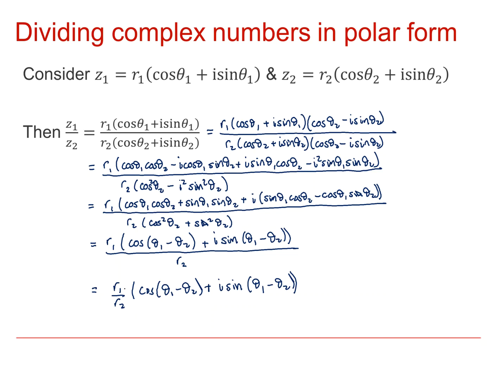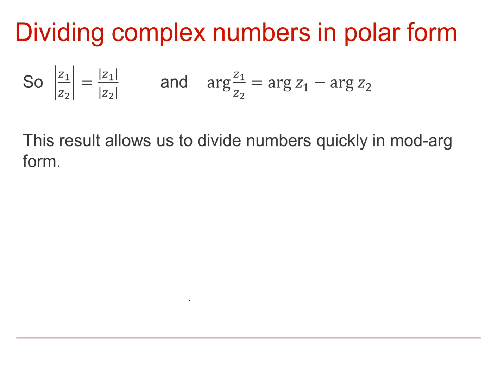So you can see that the modulus of Z1 over Z2 is the modulus of Z1 over the modulus of Z2, and the argument of Z1 over Z2 is the argument of Z1 take away the argument of Z2.